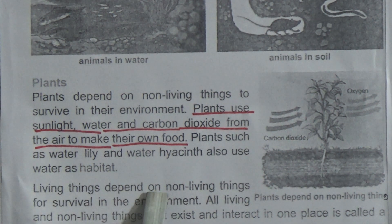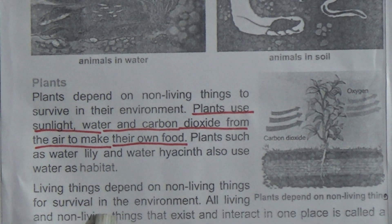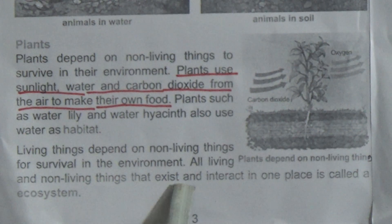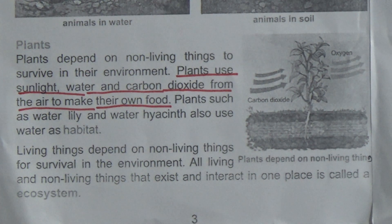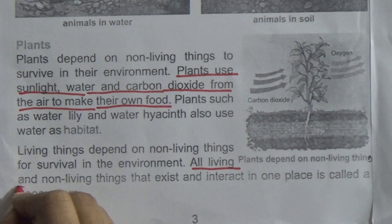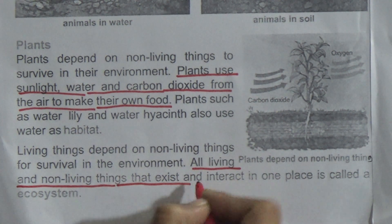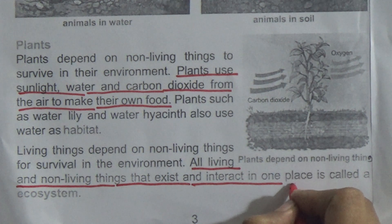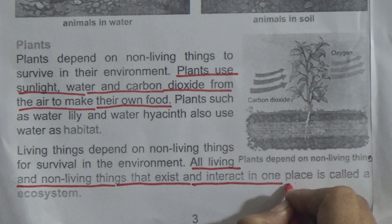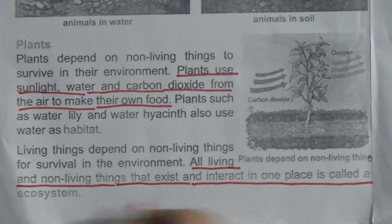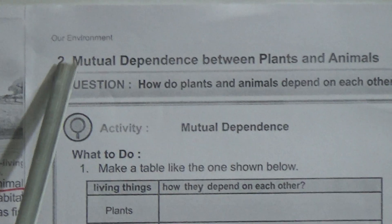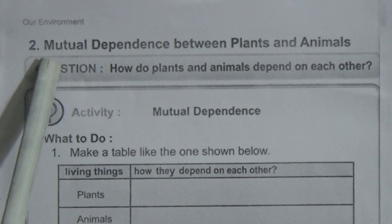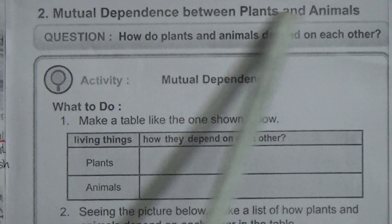Living things depend on non-living things for survival in the environment. All living and non-living things that exist and interact in one place is called an ecosystem. This is the definition of ecosystem, so please underline this line. Now, come to the next page — page number four — which covers Mutual Dependence between Plants and Animals.